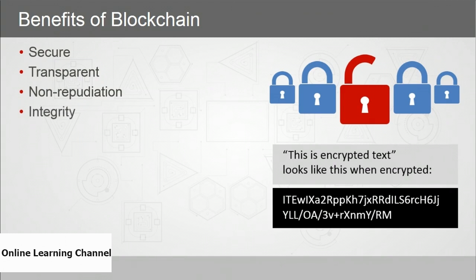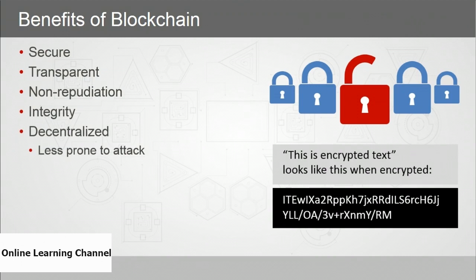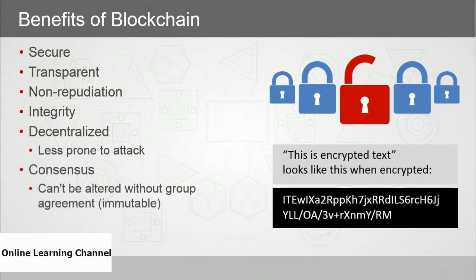Blockchain offers integrity because the very nature of a decentralized database all but eliminates the risk of corruption. It's less prone to attack and cannot be modified without group consensus. You can't add to the blockchain without at least 51% of the network agreeing. The blockchain is immutable — once a record has been added, it's there forever. You can't go back and change it, and that immutability is very attractive for all sorts of reasons.